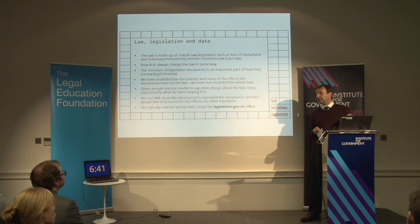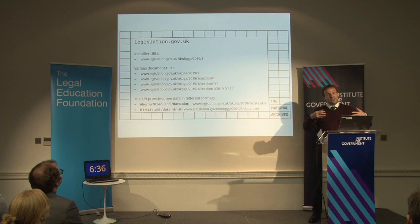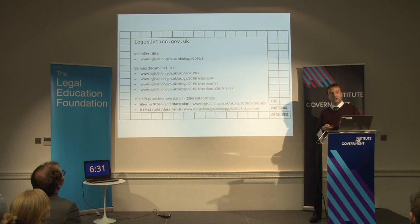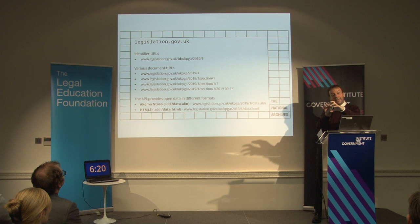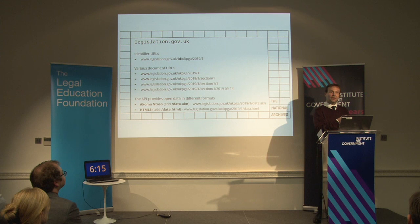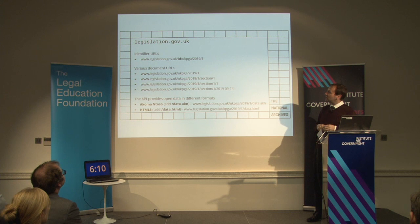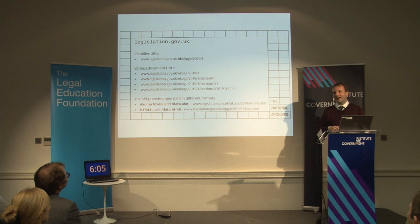What glues all of our data together is quite a sophisticated scheme using URLs. That allows us to link and connect the documents as they're changing over time and as they apply to different parts of the UK in different ways, with data about what parts of the law are doing — particularly data about amendments. The URL scheme for legislation at GOV.UK is kind of a symphony to the power of URLs for allowing you to bring together document-oriented information and data.